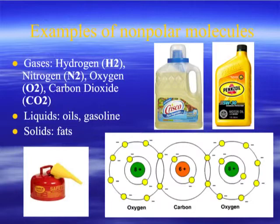If you notice the carbon dioxide molecule in the lower portion of this screen, the nucleus of the carbon atom has six protons, and those of the oxygen atom have eight. Those nuclei are very similar in size. As a result, there is strong sharing of electrons between them, forming very strong covalent bonds. This molecule is nonpolar because the electrons are shared equally amongst all three atoms.